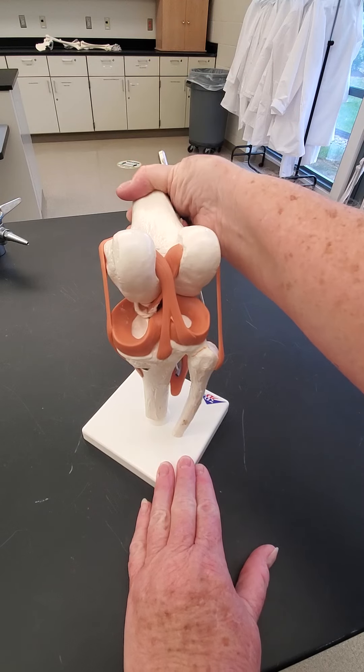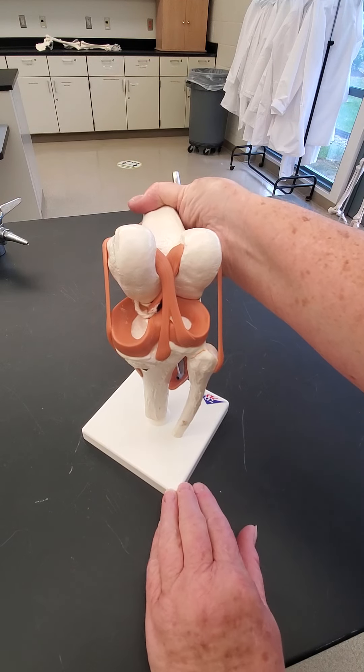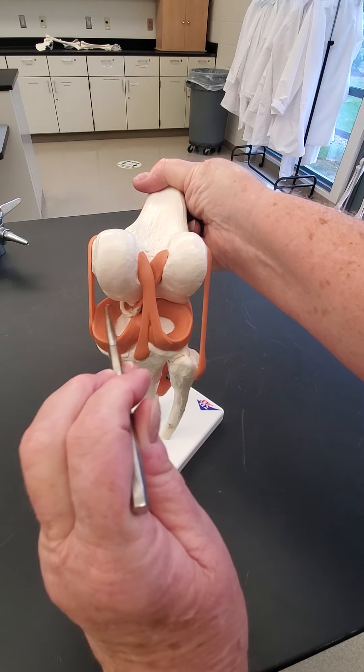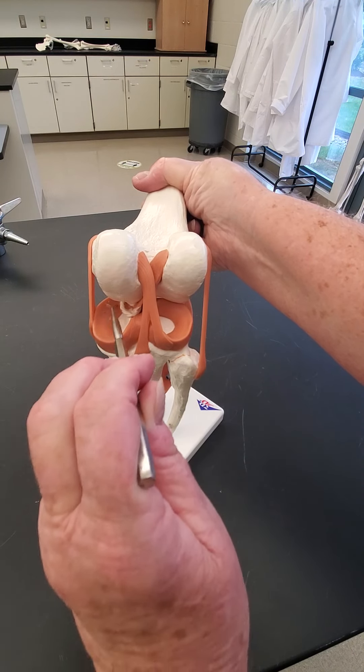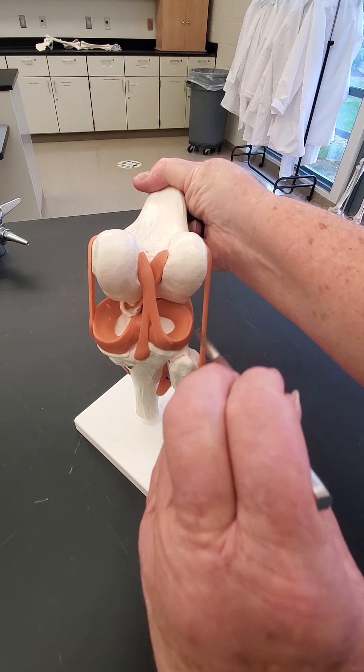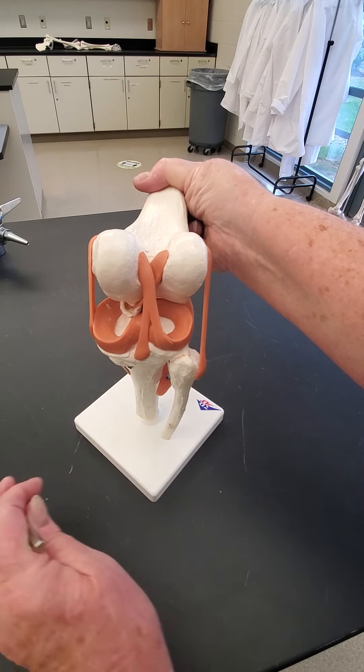If we pull this femur out of the way, you're going to see the meniscuses. So meniscuses are cups of cartilage. They're made out of fibrocartilage. They give the knee a little bit more stability because quite honestly,